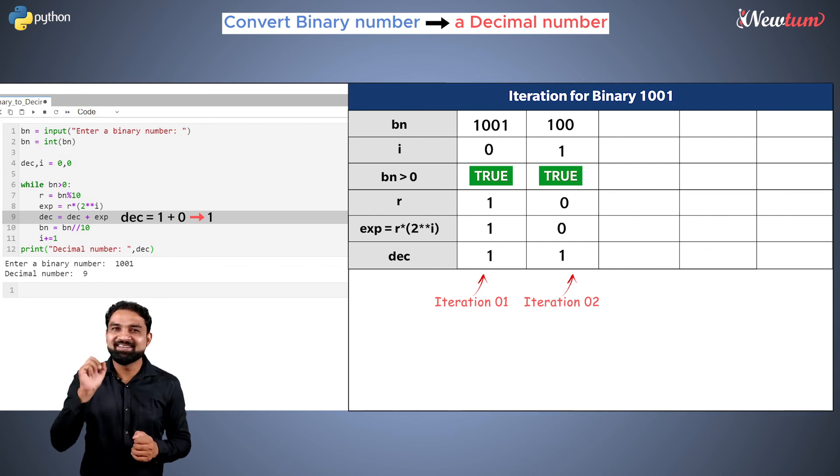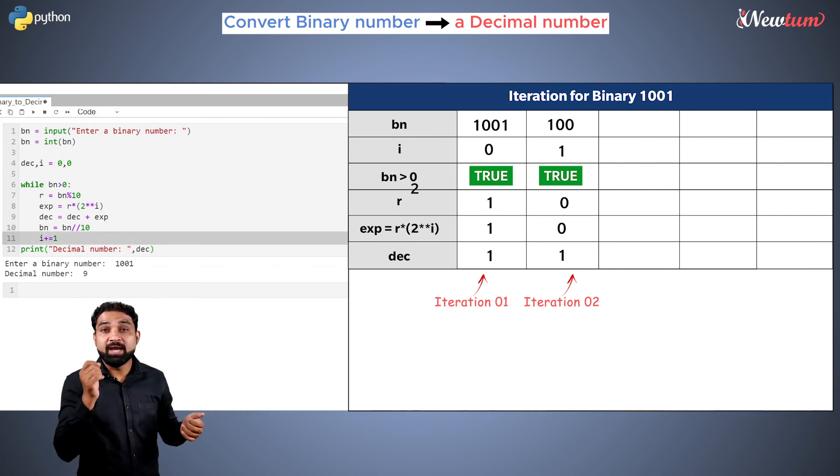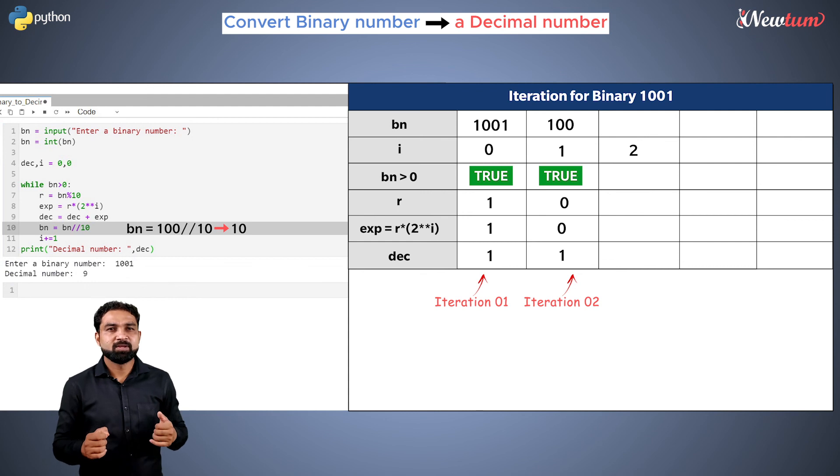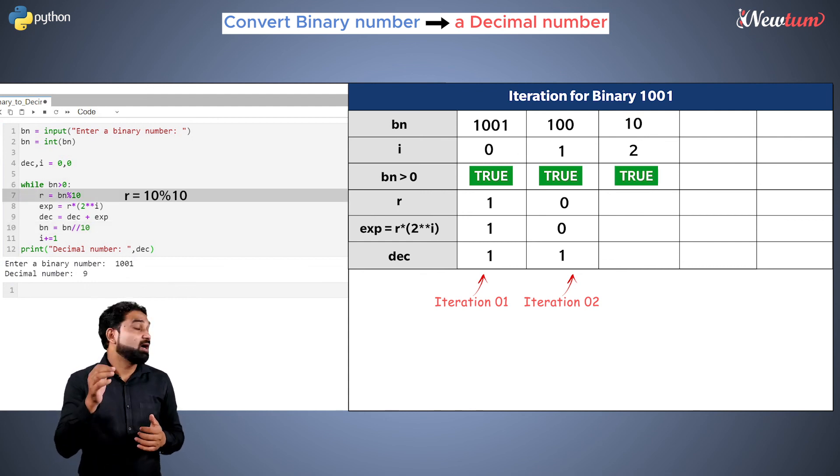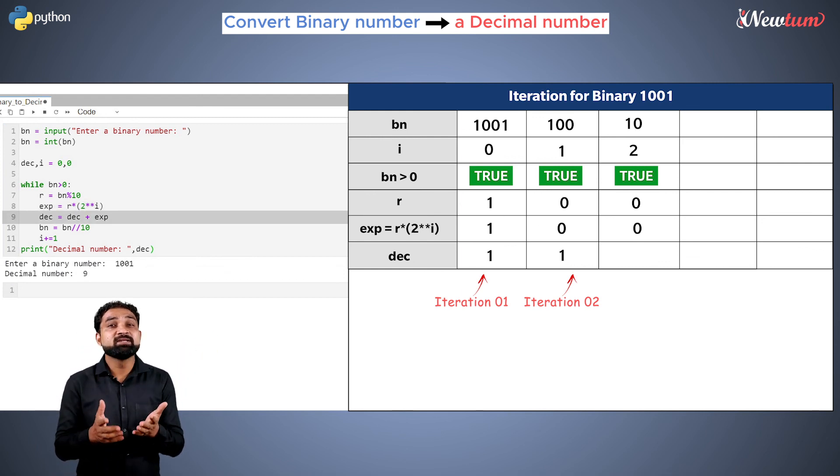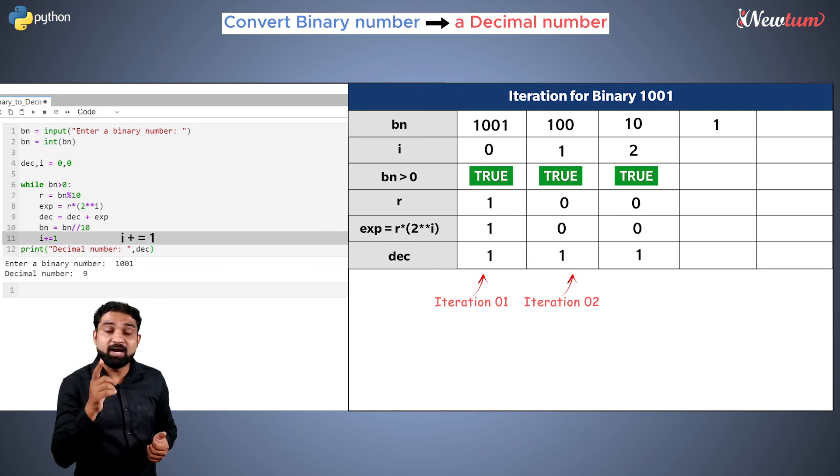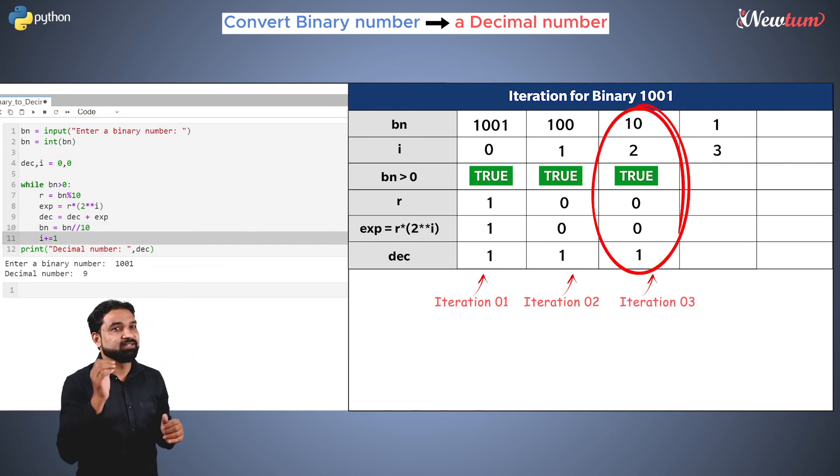Hope you are still holding on. It is time for the third iteration. Now we will move to the third iteration. Here we will have i as 2 and bn as 10. Again we will have r as 0, and hence the expression will give output 0. And our dec will be same, that is 1. In the next line, bn will become 1 and i will become 3. This completes the third iteration. Please bear one more iteration with me.